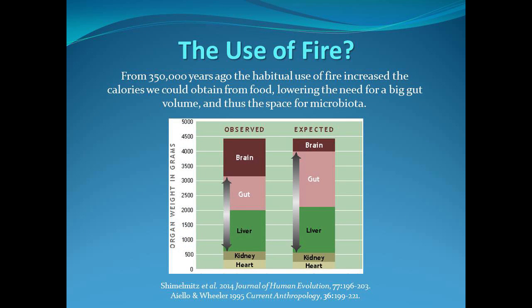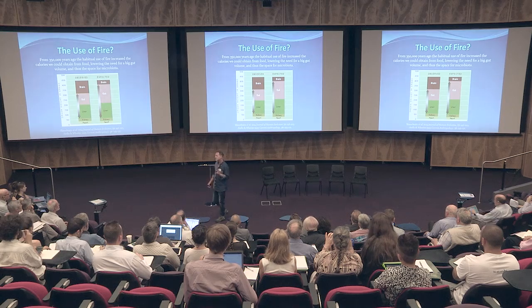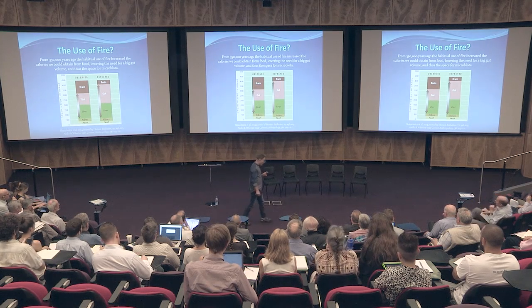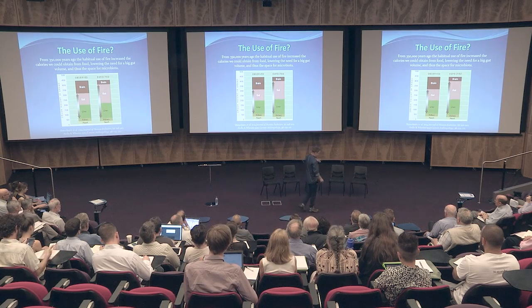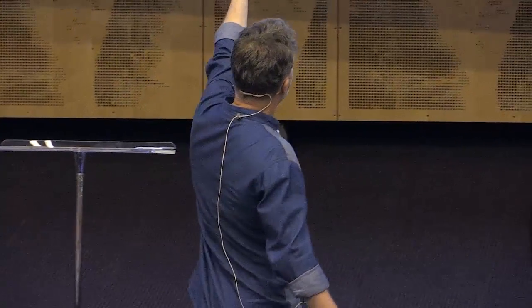One of the interesting things is the expensive tissue hypothesis. For our size, we have a much bigger brain than we should and a much smaller gut. One suggested reason is our use of fire - we now know fire goes back to about 350,000 years ago. Using fire to prepare food increases the calories you can obtain from the same amount of food, allowing you to put more resources into your brain instead of your gut. Your gut shrinks, your brain gets bigger, and modern humans evolve.